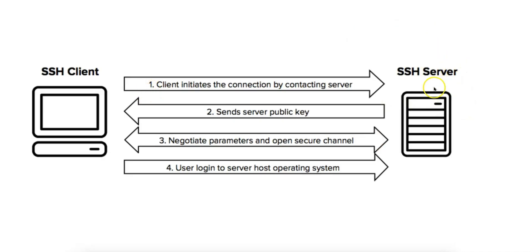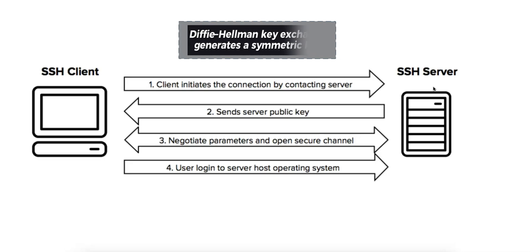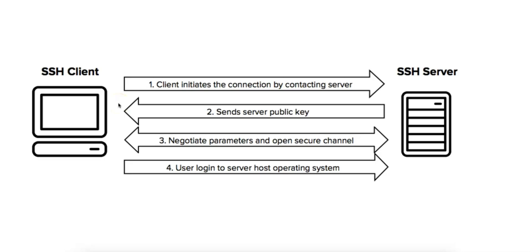When the client tries to connect to the server, they negotiate encryption parameters, and SSH uses algorithms like Diffie-Hellman or RSA to securely exchange cryptographic keys. Exchanging cryptographic keys means securely sharing encryption keys between the client and the server to establish a secure encrypted communication channel, ensuring both parties can encrypt and decrypt messages while preventing eavesdroppers from accessing the key.